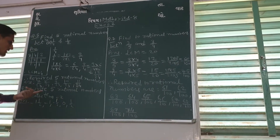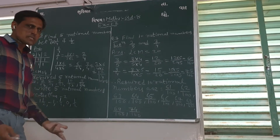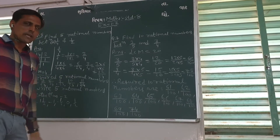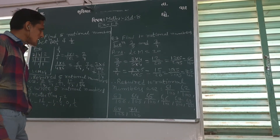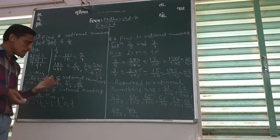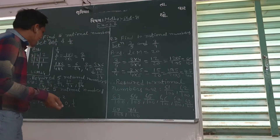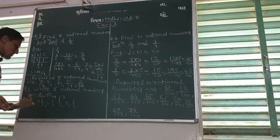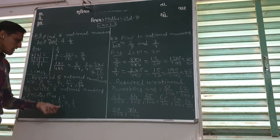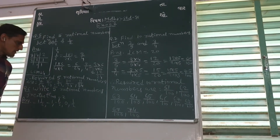Write 5 rational numbers greater than minus 2. So we can write: minus 1 and a half, minus 1, minus a half, 0, and 1/2. All these are greater than minus 2.